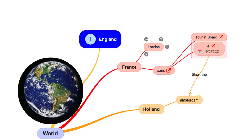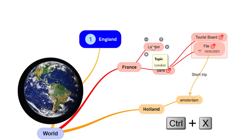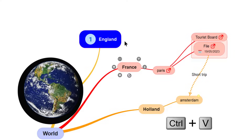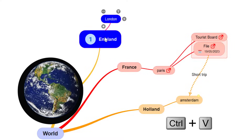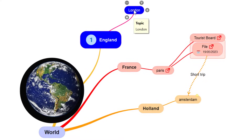I've got London here but I don't want it there, so I'll highlight it and do Ctrl+X to cut it, then click on England and Ctrl+V to paste it. You can see how it keeps the color and keeps your workflow flowing.